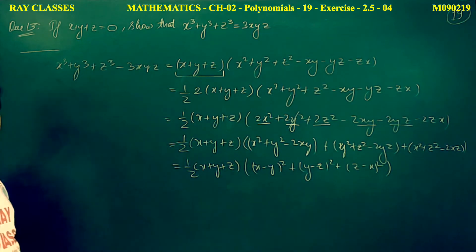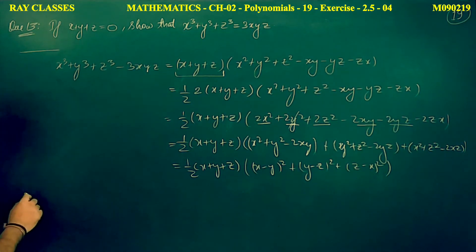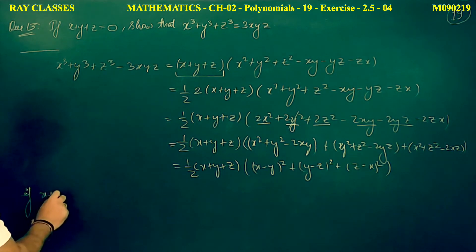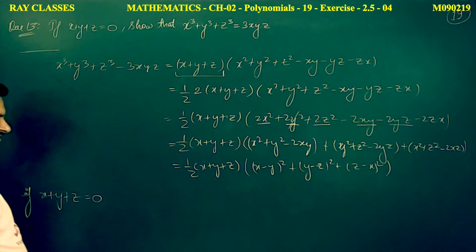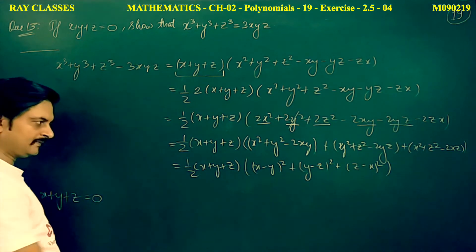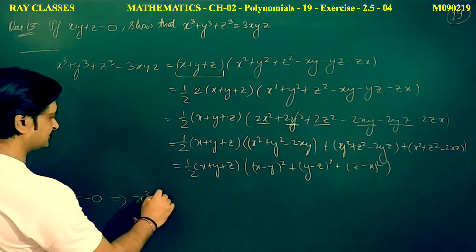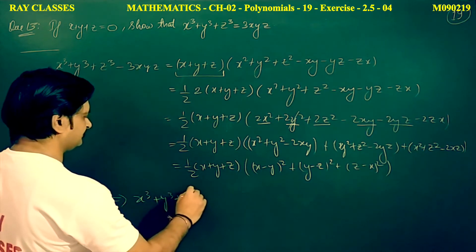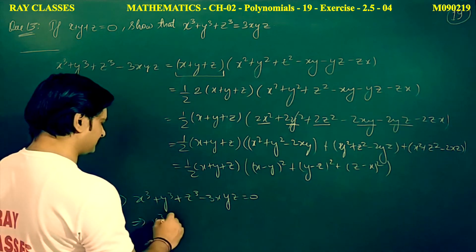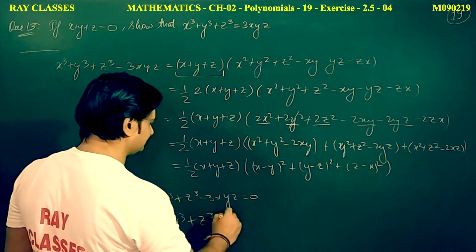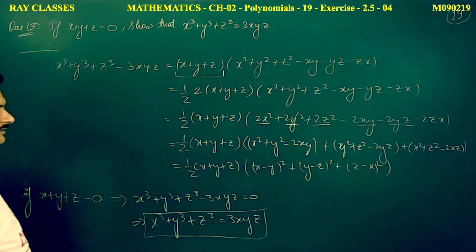Now this is a very important analysis. We say that if x plus y plus z equals 0, then the whole expression becomes 0. This implies that x cubed plus y cubed plus z cubed minus 3xyz equals 0, and therefore x cubed plus y cubed plus z cubed equals 3xyz. This was what we had to prove in question 13.